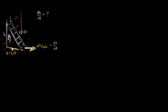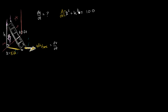We know the relationship between x and h at any time because of the Pythagorean theorem. We can assume this is a right angle, so we know that x² + h² is going to be equal to the length of the ladder squared — equal to 100. And what we care about is the rate at which these things change with respect to time, so let's take the derivative with respect to time of both sides. We're doing a little bit of implicit differentiation.